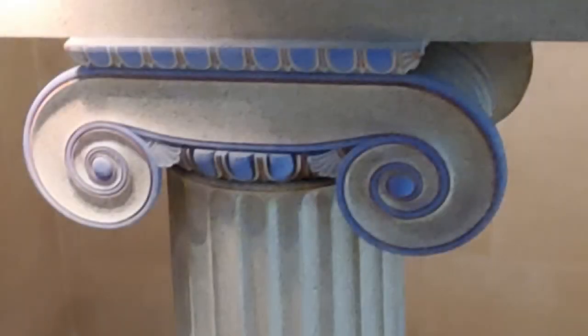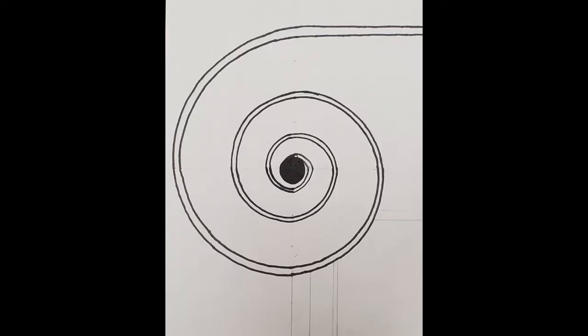In this session, we will be using the capitals of the ionic columns in the Parthenon's treasury to learn how to create a mathematical spiral in just a few easy steps.